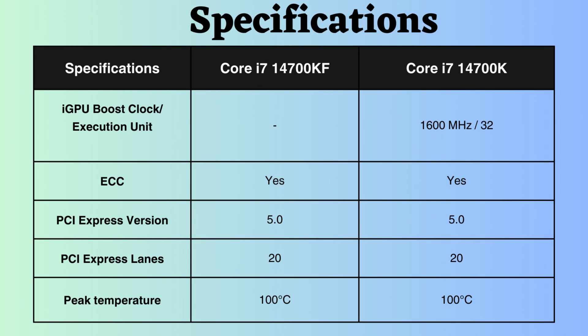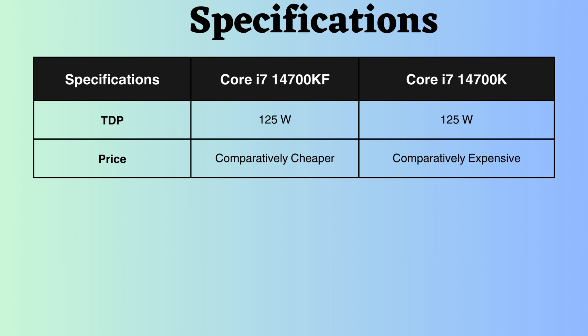Both processors support ECC, making them suitable for critical systems like servers and workstations. They also support PCIe version 5 with 20 PCIe lanes, allowing up to 20 different PCIe devices to be used simultaneously. With a peak temperature of 100 degrees Celsius, both processors can operate under maximum load without thermal throttling or damage. The TDP for both processors is 125 watts.